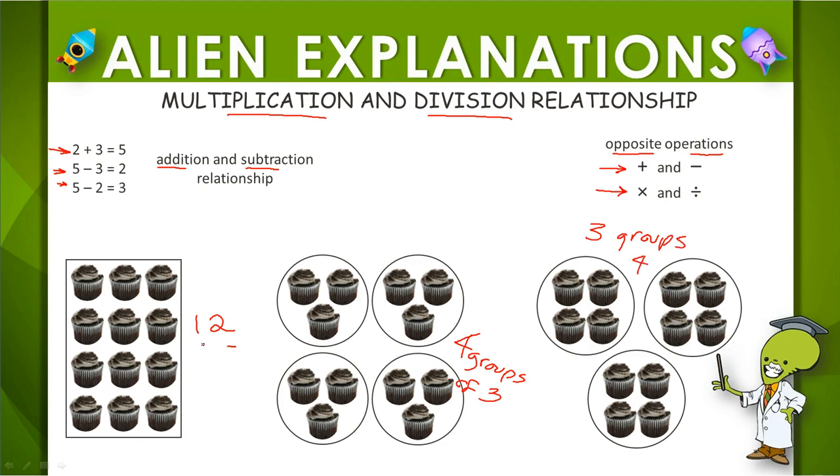When I separate into equal groups, that's when we use division. 4 groups of 3 is 4 times 3. 3 groups of 4 is 3 times 4. Both of them equal 12.